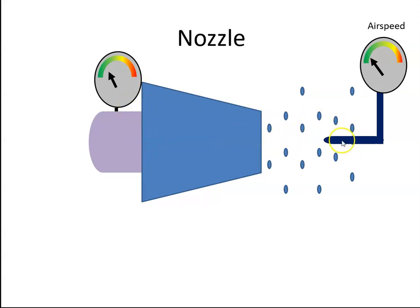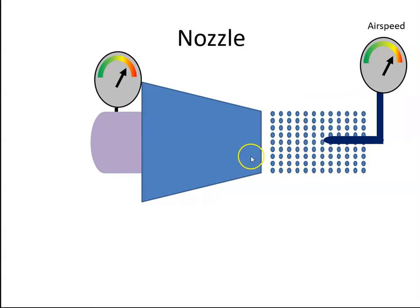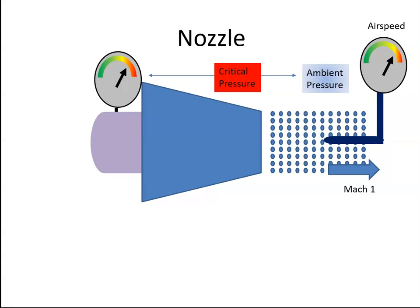If we increase the pressure, the velocity will also increase, and at some stage the velocity will get so fast that it will become Mach 1 or maybe exceed Mach 1. The pressure we're really concerned about is called the critical pressure. If the air has to expand below the critical pressure, the pressure differential is so high that we will get supersonic flow. In other words, if the ambient pressure is less than the critical pressure, we'll get supersonic flow.